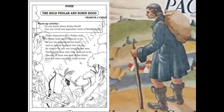By chance he met two troublesome men, two troublesome men they chants to be. The one of them was bold Robin Hood and the other was little John so free. So on the road he met two troublesome men — one was bold Robin Hood and the other one was little John, and they were very free.